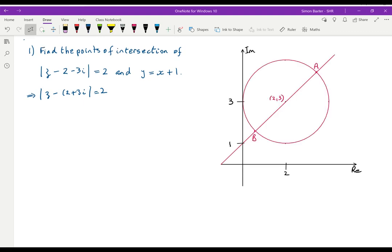Well, here it is, and we want to find the two points A and B. Center of the circle at 2, 3, radius is 2, so it touches the imaginary axis, and I can write that we have a radius of 2.